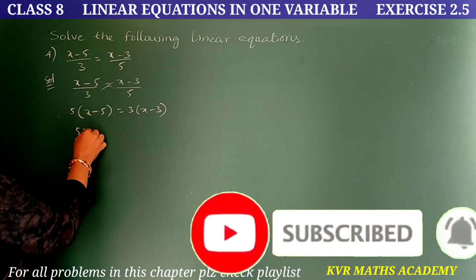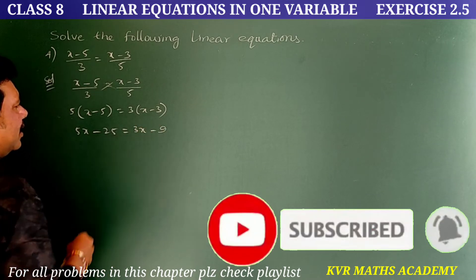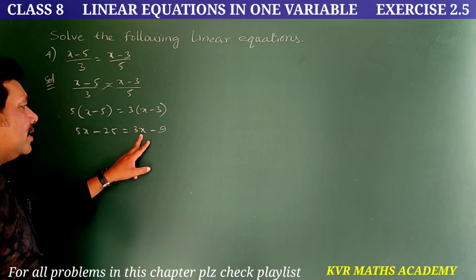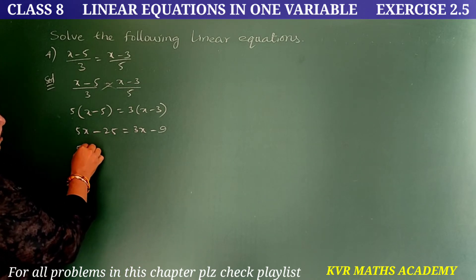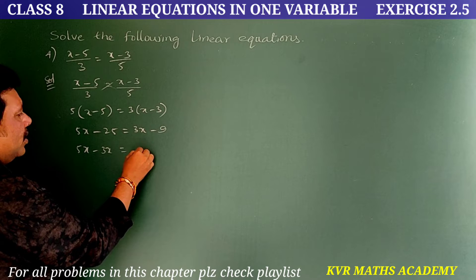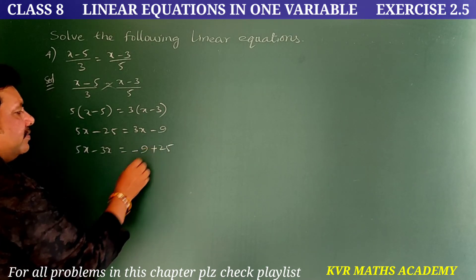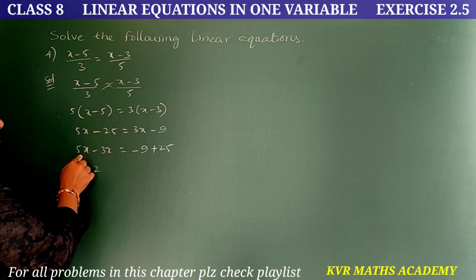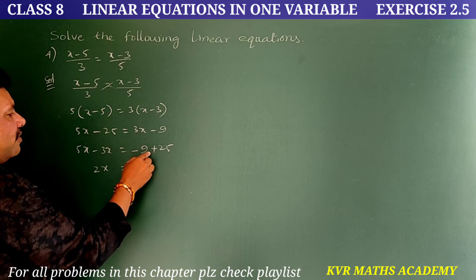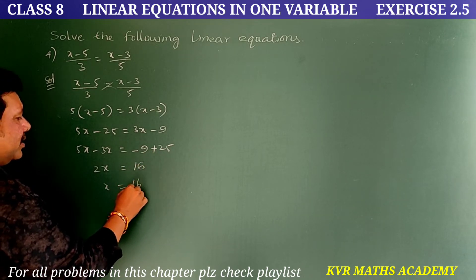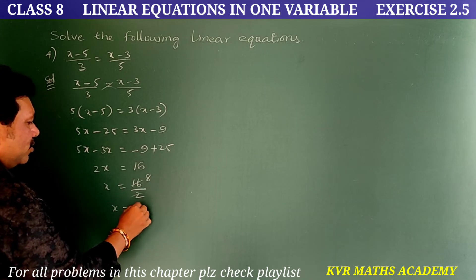Expanding: 5x - 25 = 3x - 9. Transfer 3x to the left: 5x - 3x = -9 + 25. So 2x = 16, giving x = 16/2 = 8.